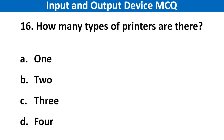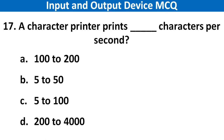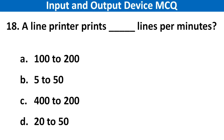Next question: How many types of printers are there? Right answer is option B: 2. Next question: A character printer prints how many characters per second? Right answer is option D: 200 to 4000. Next question: A line printer prints how many lines per minute? Right answer is option C: 400 to 2000.